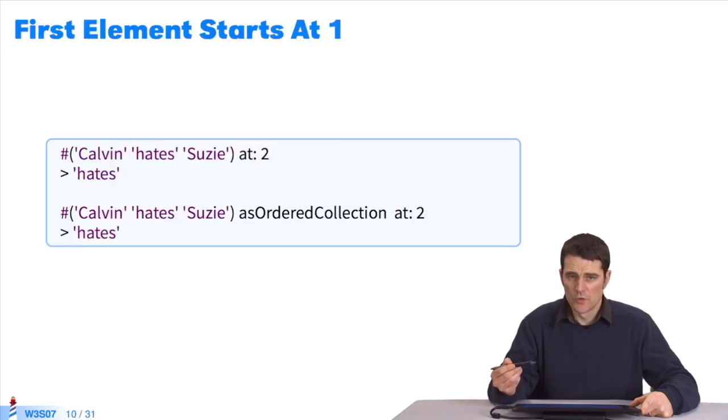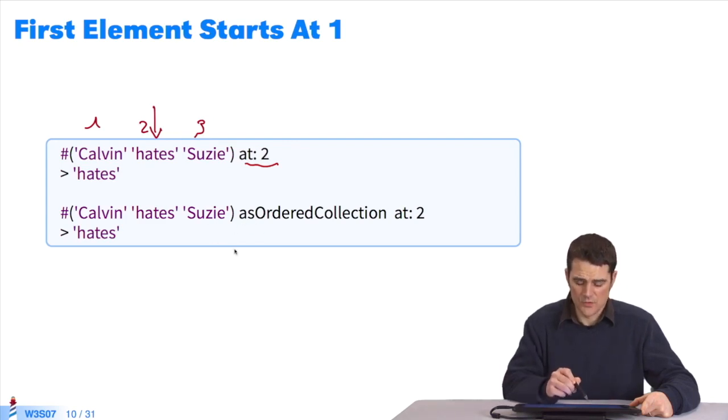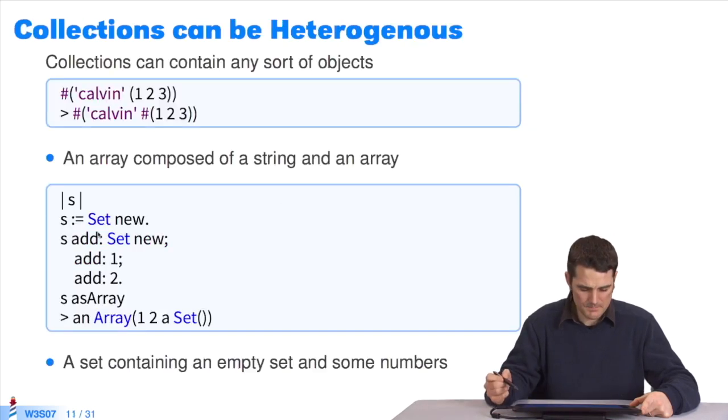Remember that in Pharo, every collection starts at index 1. If I ask this three-element collection to return the element at index 2, it'll be this one. This is 1. This is 2. This is 3. It's the same with OrderedCollection. If I convert this collection and ask it to return its index 2, I'll get the same result, hates.